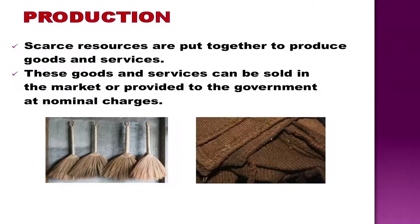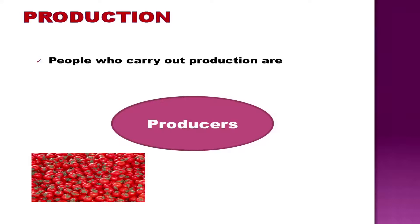Let us understand a little bit more about production. Previously we have discussed regarding scarcity of resources and making choices. These scarce resources are used in the production of goods and services. The goal of production is to satisfy our wants. The goods and services produced can be sold in markets or can be provided by the government for the public at nominal charges so that they satisfy various wants. In other words, production is defined as creation of utility, where utility is the want-satisfying power of a commodity. Production activities involve making of goods and services. People who make and sell these goods and services are known as producers.